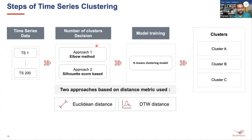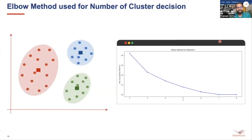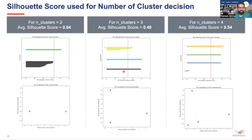The steps are the same as the last session: first take the number-of-clusters decision, then do model training, and finally get the clusters. For the elbow method on this data, we plot the sum of squared distances against the number of clusters and choose the point giving the least sum of squared distances without creating too many clusters. For this plot we could choose either three or four, so it's difficult to decide from this plot alone.